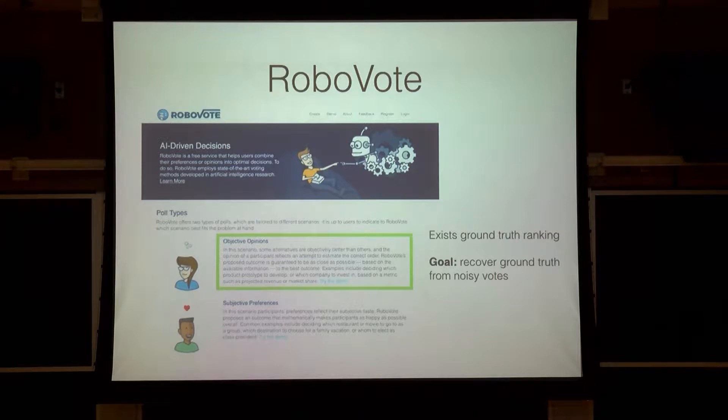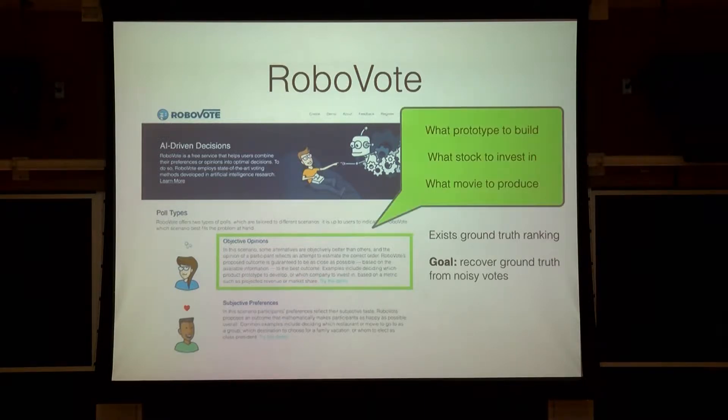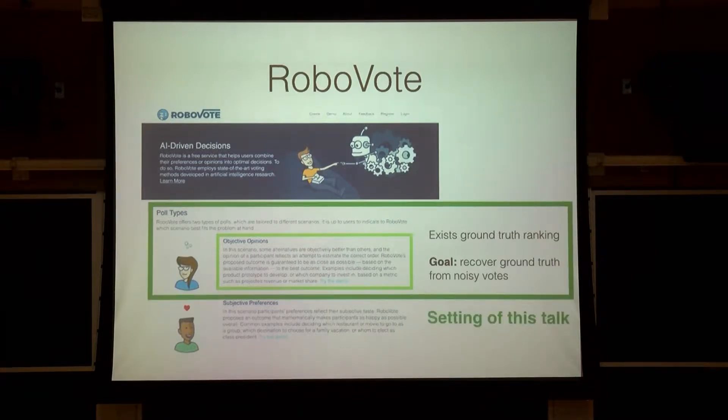Contrast this to the second situation, which is that of which we've termed objective opinions, where there actually is an objective ground truth or something you can evaluate ex post actually deciding what you want to do. So this may seem like an unintuitive setting, but this actually occurs a lot in real life. So if you have a bunch of scientists trying to pick a prototype to build or have a bunch of people trying to decide what stock to invest in, this is all stuff that basically says your goal is to recover some sort of ground truth from noisy votes for people who actually don't know the ground truth. And so in this talk, we'll be studying only the objective opinion setting.